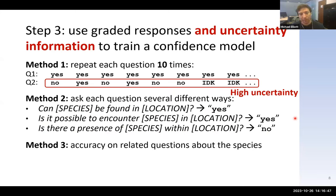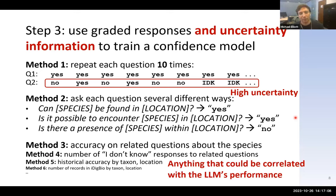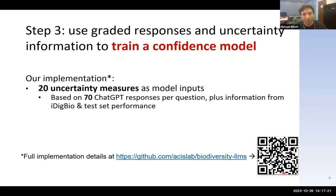A third method was to ask related questions — not about species occurrence, but for example asking ChatGPT to provide a full taxonomic ranking for the species. If it can do that, we assume it knows more and may have more credibility in its predictions. We collected as much information as we thought might correlate with the LLM's accuracy. We ended up with 20 uncertainty measures as model inputs. To collect these 20 measures, we needed about 70 responses from ChatGPT per record. Though that sounds like a lot, it's pretty optimized — when you're only collecting one word per question, the overhead is minimal.